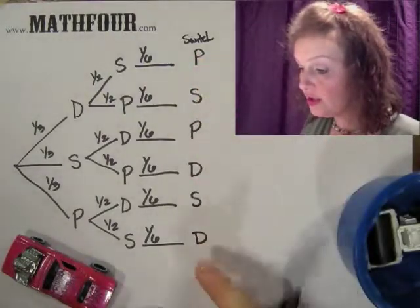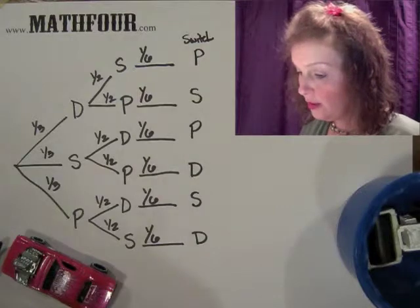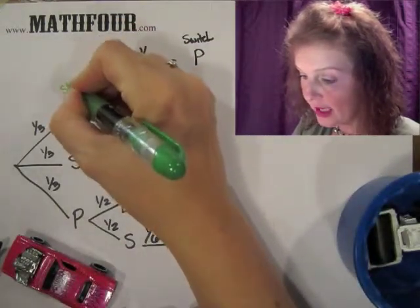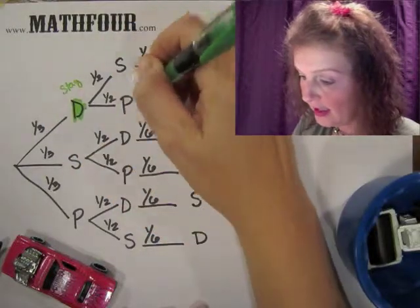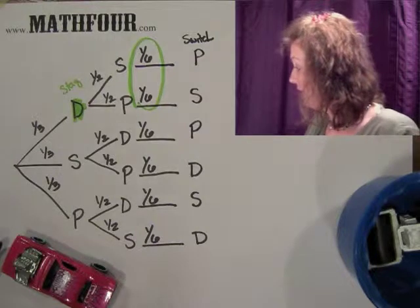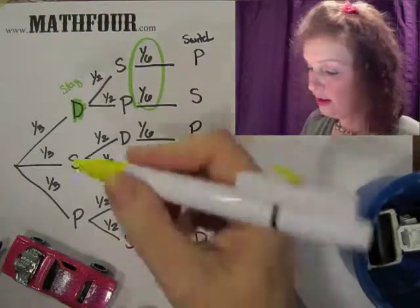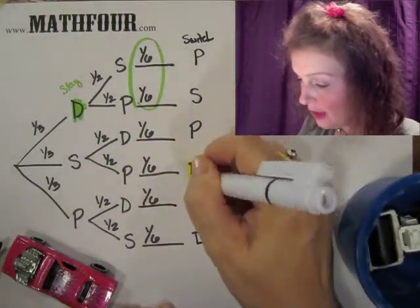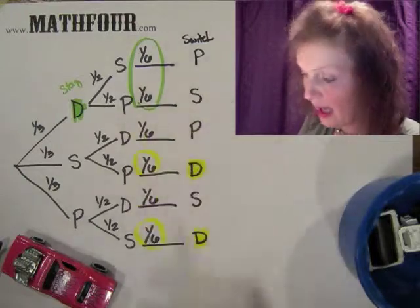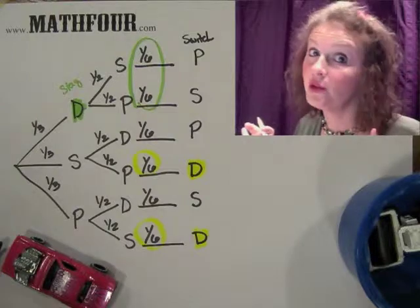So notice where my desired outcomes are. This is if I stay and I get these two. And if I switch, here are my desired outcomes and it's these two added together. Guess what? They're exactly the same, but there's more. Here's the deal.